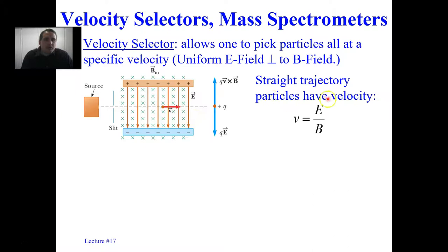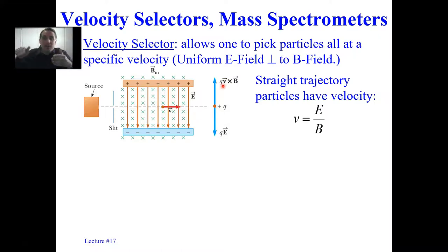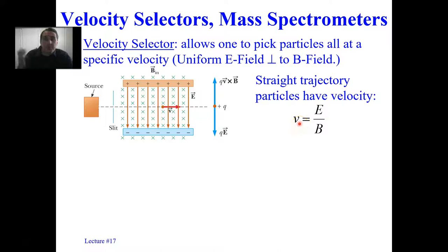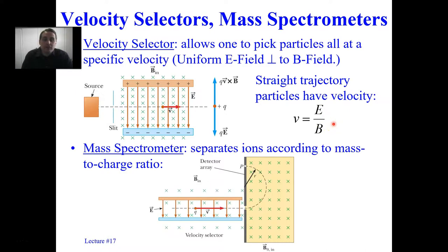Velocity selectors are also used for CRTs — cathode ray tubes — radar displays, and old-school computer monitors and television sets, because you can direct electrons up, down, left, and right by adjusting electric and magnetic fields. For straight trajectories, the particles have a specific velocity. Setting QVB equal to QE and canceling Q gives: V = E/B — the velocity for a straight trajectory is just the ratio of electric field magnitude to magnetic field magnitude. Newtons per coulomb divided by Teslas gives meters per second.